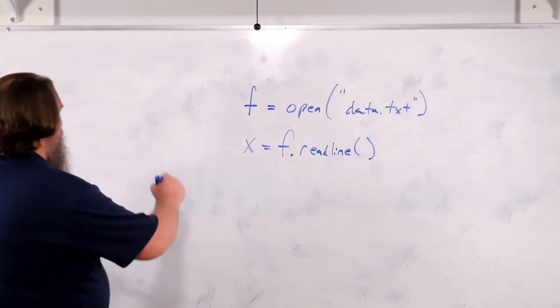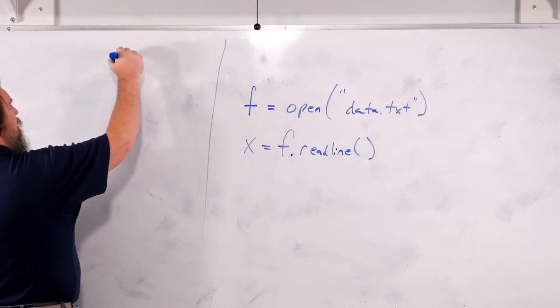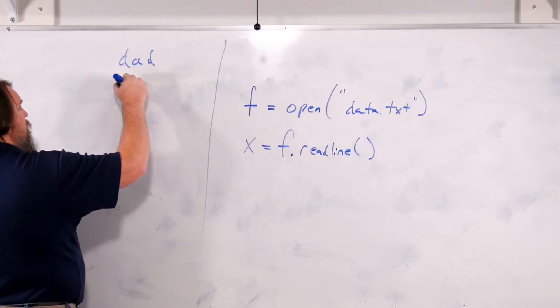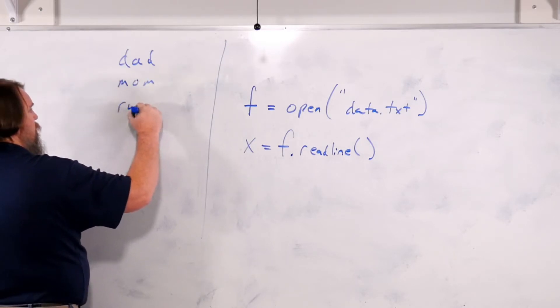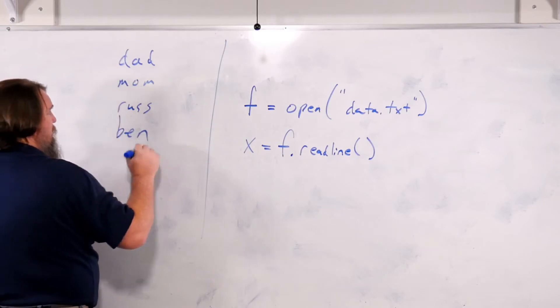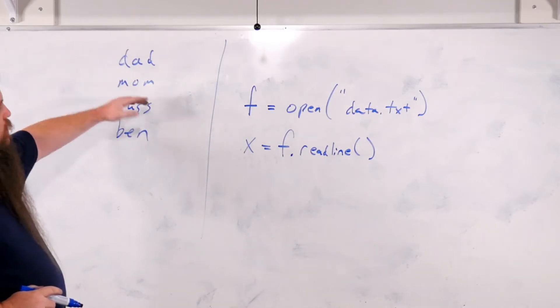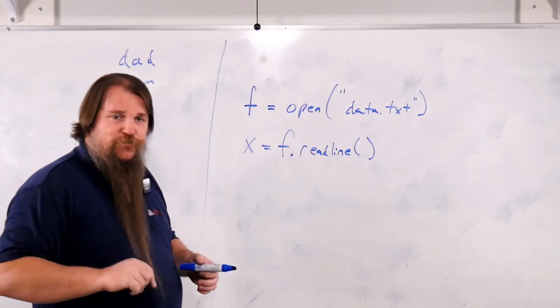Now, the one noteworthy distinction about readline is that readline will include the new line at the end of the line. So if we've got a file here that contains dad, mom, Russ, and Ben, then when you call readline on it the first time, what you're going to get is actually a four-character string.